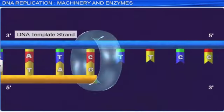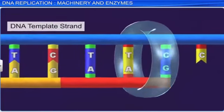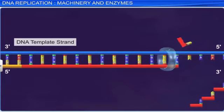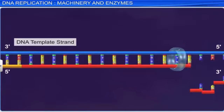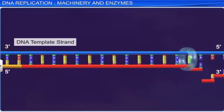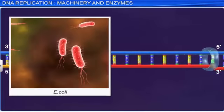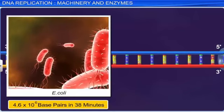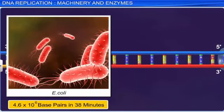The DNA replication process requires a high degree of accuracy, because any error during replication will result in mutations. Thankfully, DNA polymerase is a highly efficient enzyme that catalyzes the reaction not only with accuracy, but also does it very swiftly. It catalyzes the polymerization of a large number of nucleotides in a very short span. For instance, E. coli can replicate 4.6 × 10⁶ base pairs of diploid content in 38 minutes — that is, the average rate of polymerization is 2,000 base pairs per second.